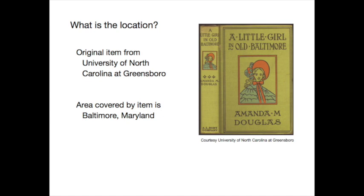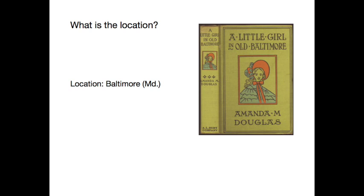So we're going to do a little mini exercise here. This is an image of a book cover, and the title is A Little Girl in Old Baltimore. The original item is from the University of North Carolina at Greensboro. But as we can see from the title, the resource is about Baltimore, Maryland. So if we were creating a metadata record for this item, what would we put down as a location? The answer would be Baltimore — it wouldn't be Greensboro. The fact that the original item resides at that university does not come into play when we're describing the resource. This really has to do with the content of the resource, not administrative information about where it came from.